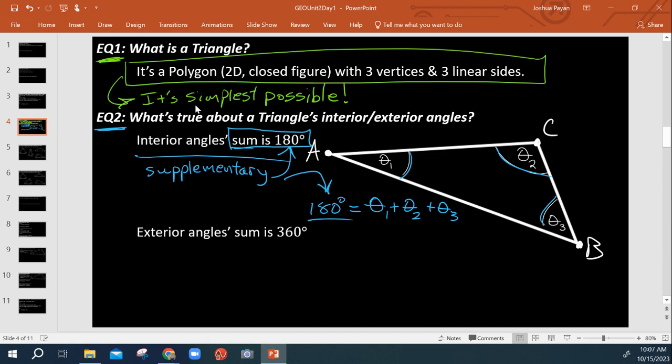No matter what, any time that you have a triangle, a polygon with one, two, three vertices, three linear sides, its three interior angles are always going to add to 180 degrees.